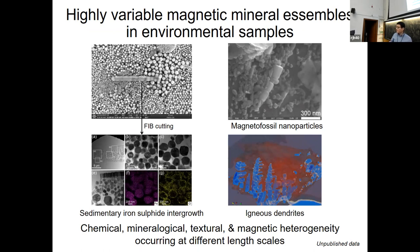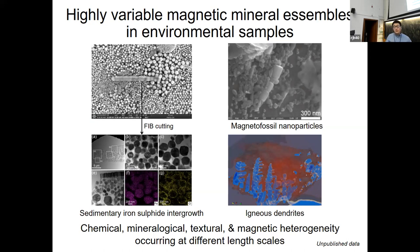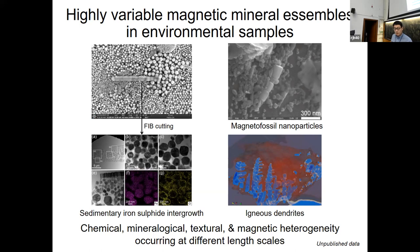If you just use bulk measurements, it's very difficult to understand these samples. On the left, I show iron oxides with really complex structures. If you take a thin section of a small region, you see really complex structures and some of the particles are oxidized. On the right, I show magnetofossil samples — particles of different sizes and morphologies. On the bottom, I show igneous dendrites with really compact microstructures. Chemical, mineralogical, textural, and magnetic heterogeneity is very common in natural samples, and it's really important to characterize these features in order to interpret bulk environmental magnetic parameters.